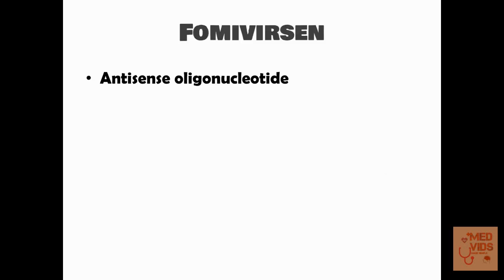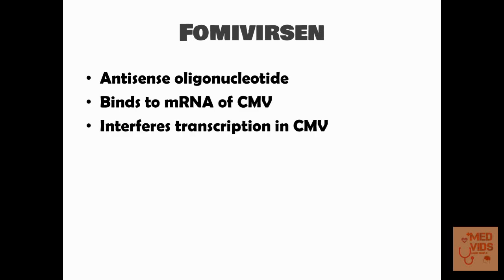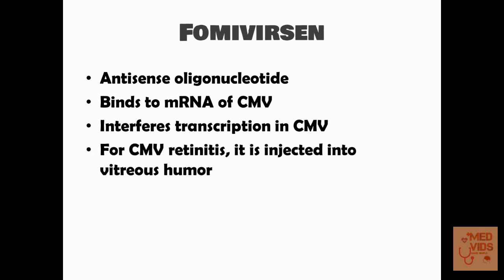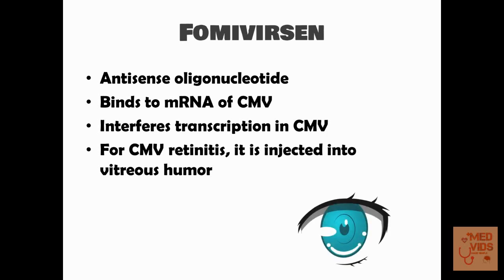Fomivirsen is an antisense oligonucleotide that binds to mRNA of cytomegalovirus, interfering with transcription. It can be used in cytomegalovirus retinitis, injected into the vitreous humor, given once weekly or once monthly. However, this drug is not commonly used because of associated toxic effects.